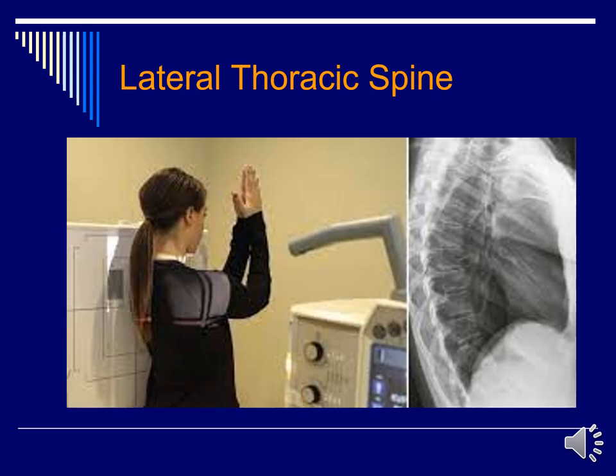For the lateral thoracic spine, this can be done either erect or on the table, similar to the lateral chest x-ray, using a 40-inch SID. Center about three to four inches below the jugular notch, at the level of T7. Be slightly posterior from mid-coronal plane to ensure you're not clipping the back of the thoracic spine. Ensure the patient is in a true lateral position — rotation cannot be greater than 0.5 centimeters or one inch difference between the posterior ribs. You can use an orthostatic breathing technique to blur the ribs around the thoracic spine, or perform it on full inspiration with suspended respiration.